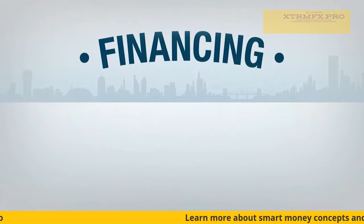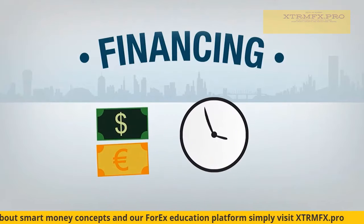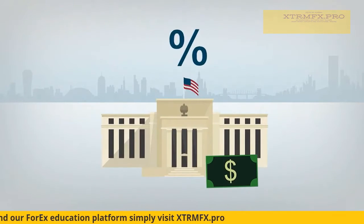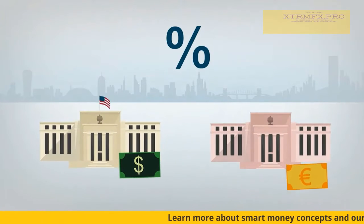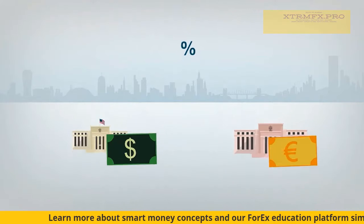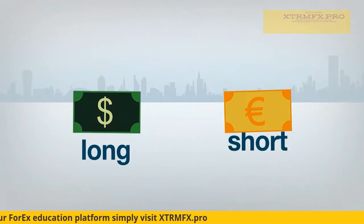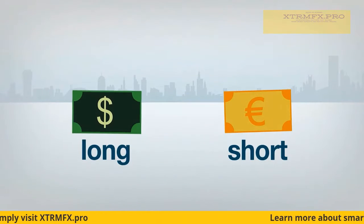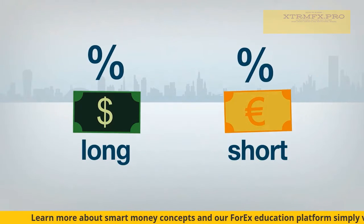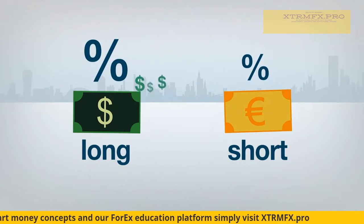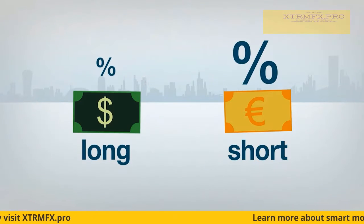One more important element in the forex market is financing — the calculation of net interest owed or earned on currency pairs when an investor holds a position past the close of the trading day. The U.S. dollar has an overnight lending rate set by the Fed, and each foreign currency has its own overnight lending rate. When you trade a currency pair, you're technically long one currency and short the other. You're lending the currency you're long and borrowing the currency you're short at each currency's overnight lending rate. An investor receives a credit if the currency he is long has a higher interest rate than the currency he is short, and is debited if it's lower.